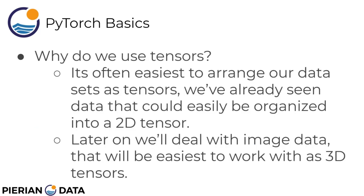So why do we actually use these tensor objects? It's often easiest to arrange our datasets as tensors. By learning about NumPy and Pandas, we've already seen that data could easily be organized as a 2D tensor or matrix, where we have rows as our data points and columns as features or a label. Later on, especially when we deal with image data, we'll see it's easiest to work with 3D tensors where we can store image data as layers of matrices. More complex layers like pooling layers and convolutional layers are where tensors really come into effect.